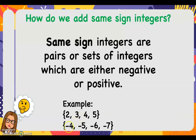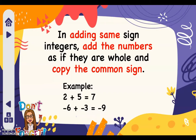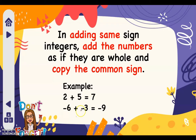In adding same sign integers, all we need to do is to add the numbers as if they are whole and copy the common sign. For example, two plus five is seven, then copy the common sign — here the common sign is positive, therefore our answer is positive seven. Another example: negative six plus negative three — add the numbers as if they are whole numbers.